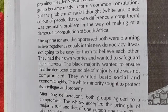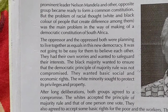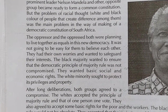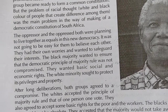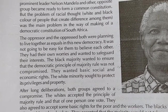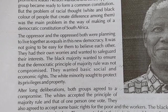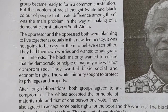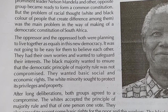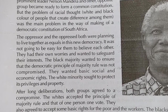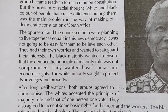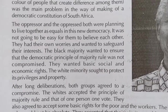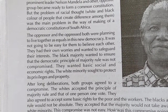The oppressor and the oppressed were both planning to live together as equals in this new democracy. It was not going to be easy for them to trust each other. The black majority wanted to ensure that the democratic principle of majority rule was not compromised, and they wanted basic social and economic rights.